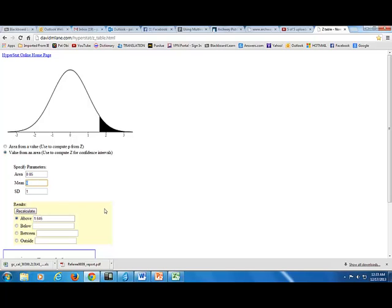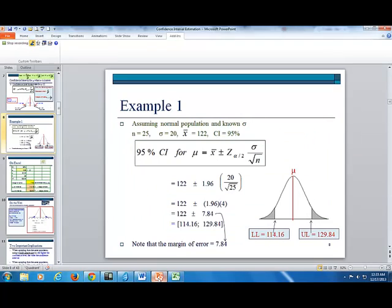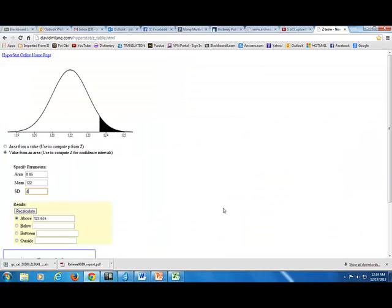The mean here refers to the sample mean we obtained, which is 122. And standard deviation here, now be careful. It does not refer to the standard deviation of the population, which is 20 in this example, but rather the standard error of x bar, which is 4. Right? If I go back here and I go back a little bit, you will see that the standard error of x bar, which is 20 over the square root of 25 is equal to 4. So that's what you type in there. And then you click here, outside. Because what it does is to shade the tail regions, the alpha over 2 regions, and give you the limits corresponding to those two regions, which as you can see here are 114.16 on the lower side and 129.84 on the upper side.